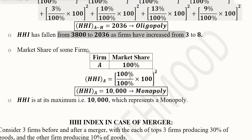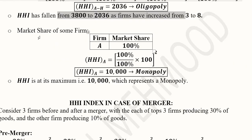If we use only one firm holding 100% of the market share and apply the formula, there is just one term and the answer is 10,000, representing a monopoly — consistent with what the range table shows.